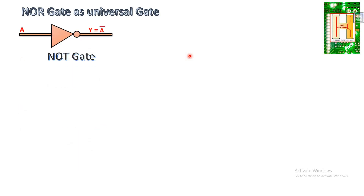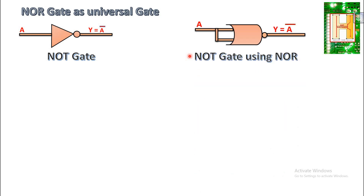Now let us talk about NOR gate as a universal gate. First, implementing NOT using NOR: the NOR gate input is shortened so both inputs are A. The OR output is Y equal to A, and since NOT is present, it becomes Y equal to A complement. The output of the NOT gate and the NOT-using-NOR are the same, confirming NOR can implement a NOT gate.